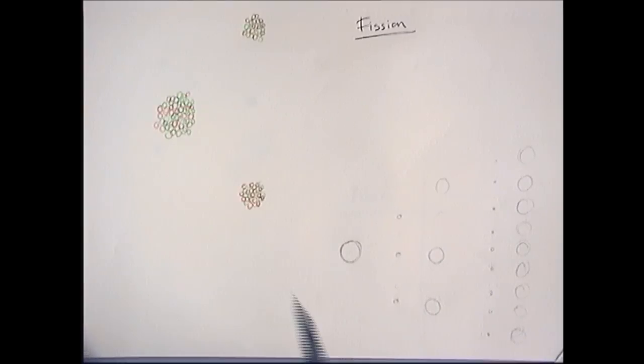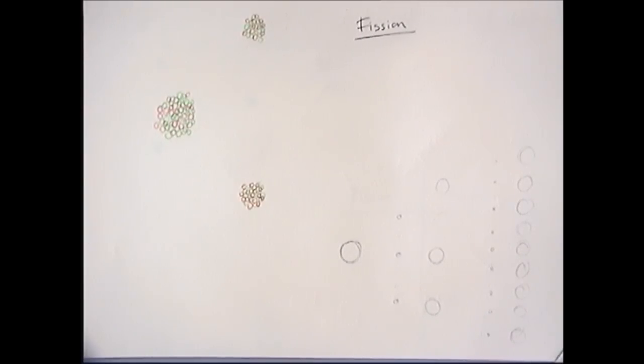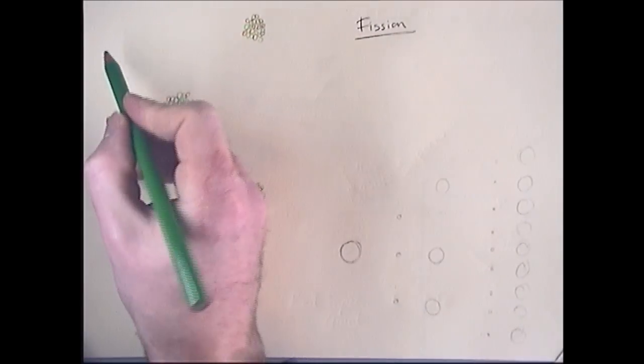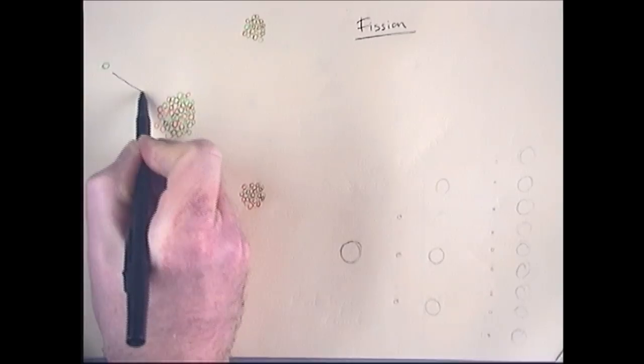Nuclear fission involves the splitting of a large nuclei into smaller nuclei. That is fission, the splitting. This happens, for example, when a neutron is absorbed by one of these large nuclei.